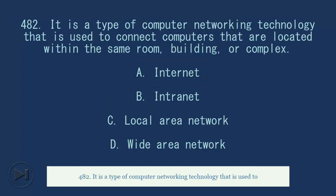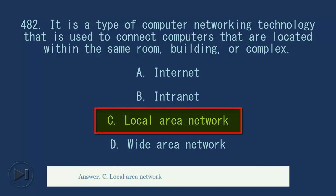482. It is a type of computer network working technology that is used to connect computers that are located within the same room, building, or complex. A. Internet. B. Intranet. C. Local area network. D. Wide area network. Answer, C. Local area network.